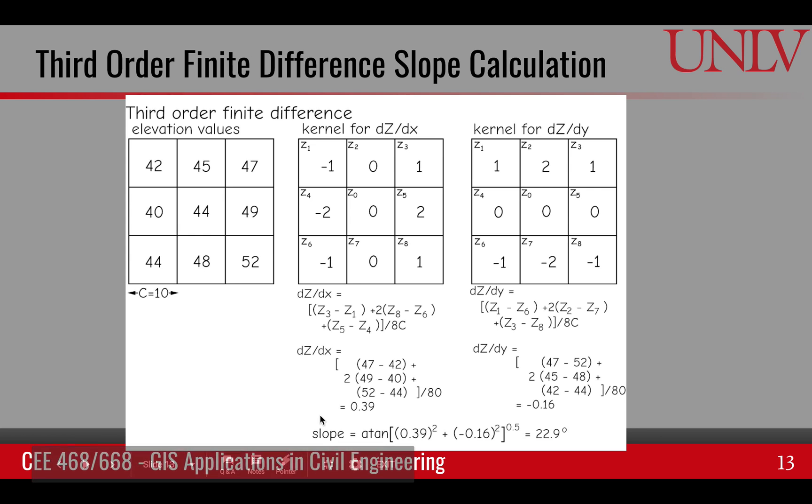The other method is the third order finite difference. In this case, we are not just using the slope along the four neighbors, but we also use the other corner neighbors as well. So this is an eight-neighbor method. If we look at the kernel, basically we are taking the difference, simple difference between the corner pixels. And we are taking twice the difference between the east and west pixel.